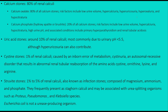Citric acid functions as an inhibitor, so when you have hypocitraturia you have less chelating substance and more calcium oxalate. Calcium phosphate accounts for 20% and is associated with low urine volume, alkaline urine pH, and primary hyperparathyroidism. Remember: stones, moans, groans — calcium phosphate due to hypercalcemia in hyperparathyroidism.